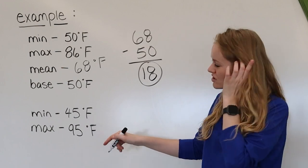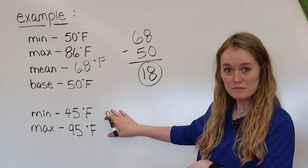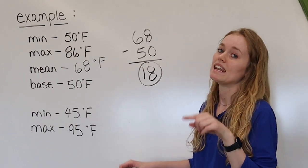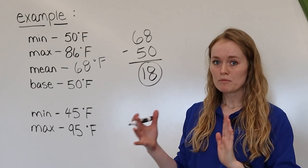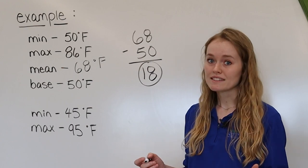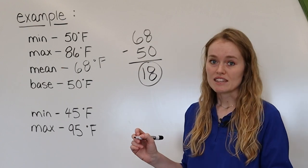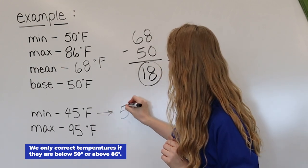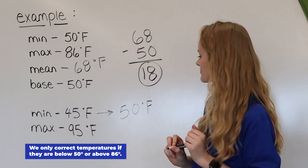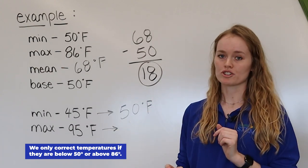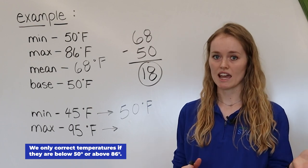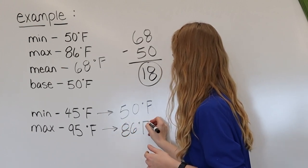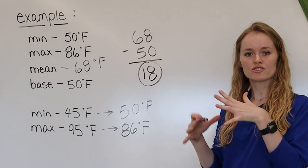On another day, we had a minimum temperature of 45°F and a maximum of 95°F. Remember the range that corn needs: the base temperature is 50°F, so we correct the minimum up to 50°F. The maximum exceeds corn's favorite temperature of 86°F, so we correct the maximum down to 86°F. That gives us the temperatures within the range that corn actually uses for growth.